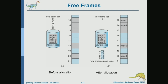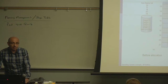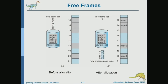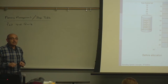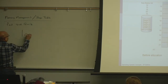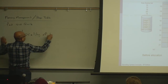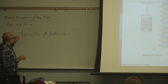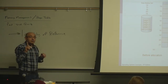Sorting the free frame list takes computation. But is there an advantage in sorting it or finding adjacent frames for a process? The advantage of adjacency relates to caching. The concept that makes caching work is locality of reference — an important concept in systems. There are two kinds of locality.